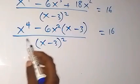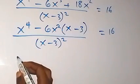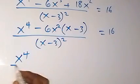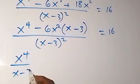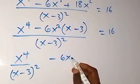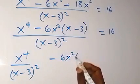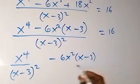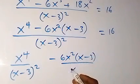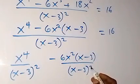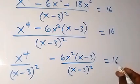We separate this into two fractions: this will become x⁴ over (x - 3)² minus 6x² over (x - 3)², which is equal to 16.